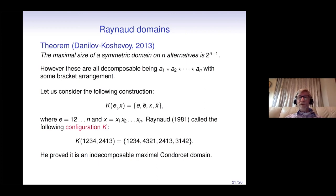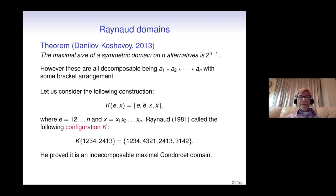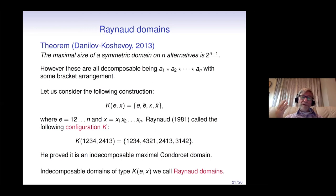What about indecomposable symmetric domains? Consider a domain of four orders {e, ē, x, x̄}. Renault in 1981 discovered the indecomposable maximal Condorcet domain with the configuration k = (1, 2, 3, 4; 2, 4, 1, 3), which he called configuration K. He proved it is indecomposable and maximal. We call such domains Renault domains.